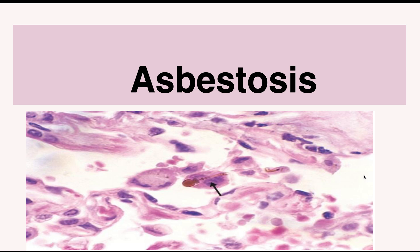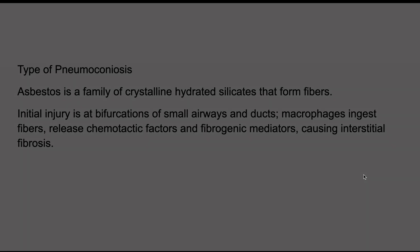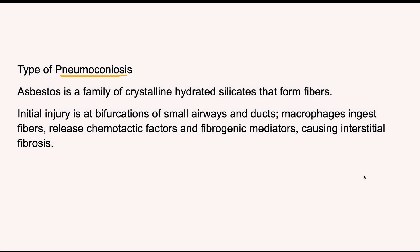In this video we will discuss about asbestosis. Asbestosis is a type of pneumoconiosis. Asbestos is a type of hydrated silicates which can form fibers. The initial injury by the asbestos fiber occurs at the bifurcation of small airways and ducts of the lung. Macrophages ingest these fibers and release chemotactic factors and fibrogenic mediators, causing fibrosis. We will discuss the morphology seen in the lungs, associated diseases, and the pathogenesis in detail.